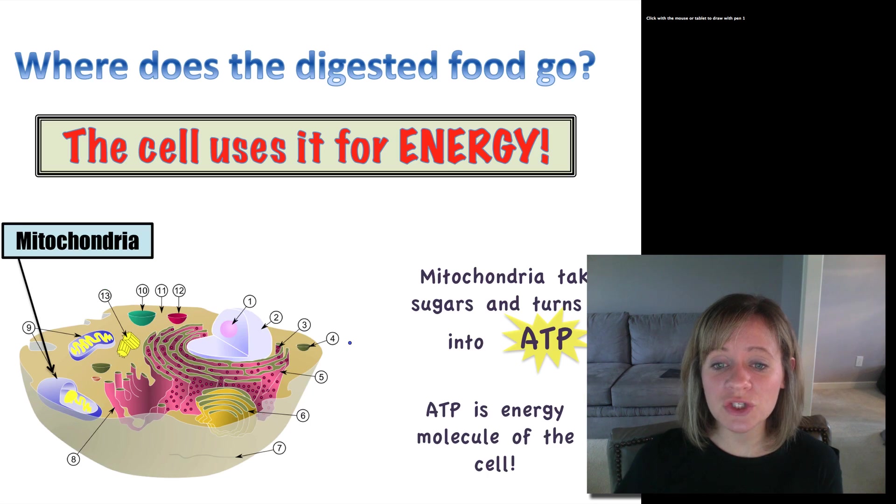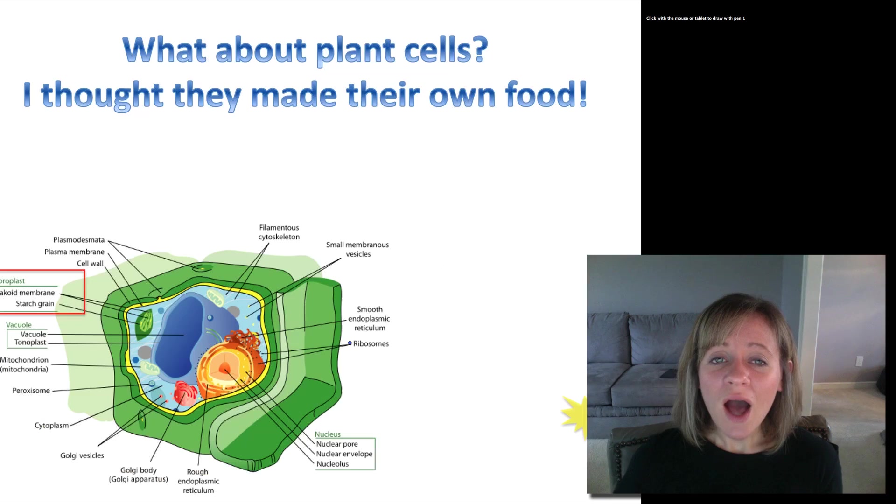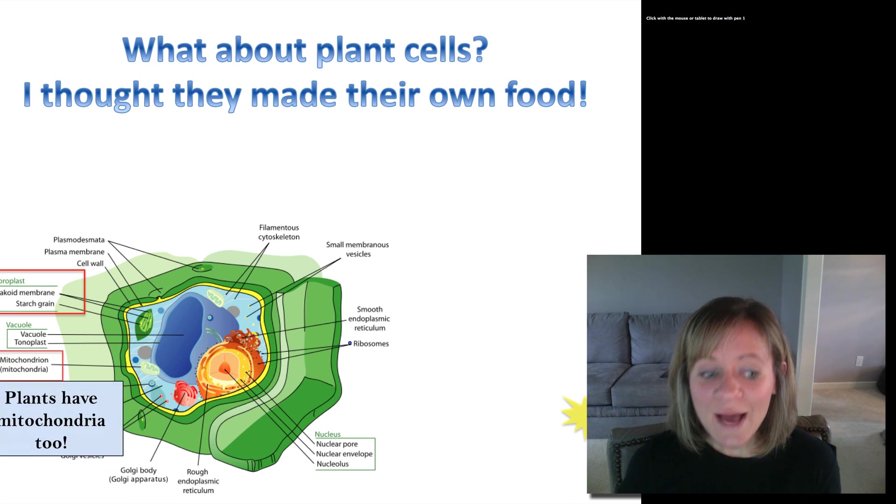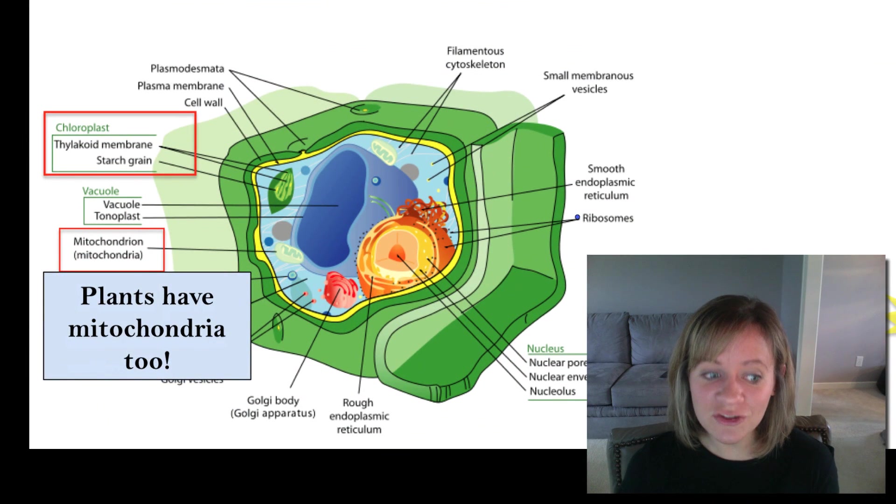Now, what about plant cells? I showed you an animal cell in this figure. Maybe you're thinking, I thought plant cells made their own food. You've been taught that all growing up. You know, plants make their own food. Well, yes, you're right. But they also have mitochondria. Very important to know. Both plant cells and animal cells have mitochondria.